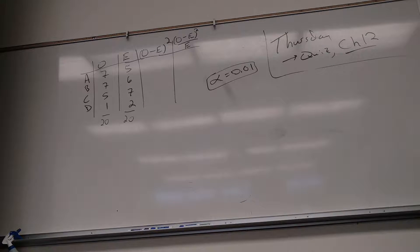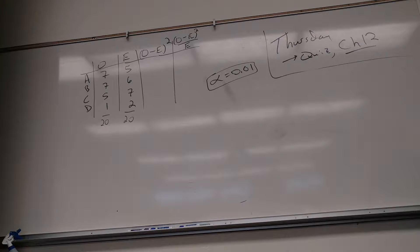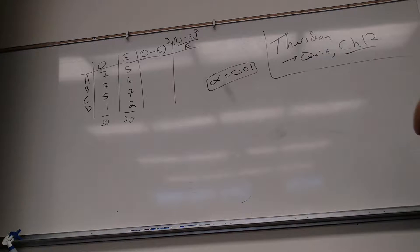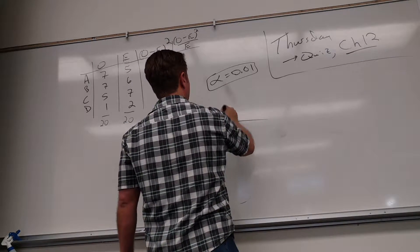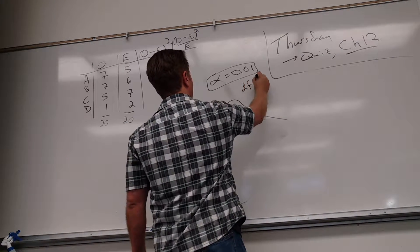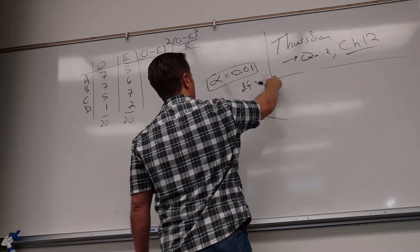All right, let me catch up to you guys. Everybody's got that. It's going to go away right now. So let's find our critical score first. Let's do this more in the way that we used to. Alpha is 0.01, what's my degrees of freedom? 3. Good, because there's four categories.